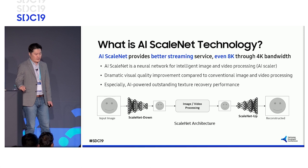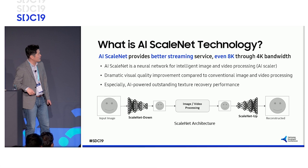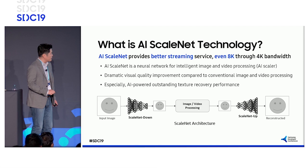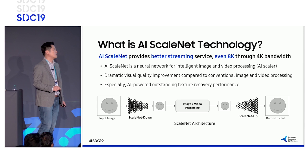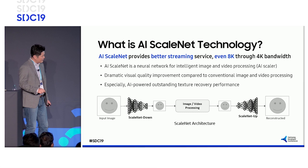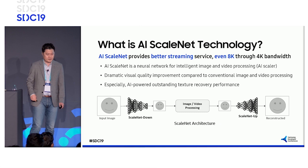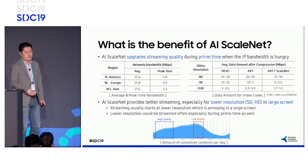Basically, ScaleNet is a neural network for intelligent image and video processing. It provides dramatic visual quality improvements compared to conventional image and video processing. This picture describes the ScaleNet architecture. The input image is scaled down by ScaleNet Down, then regular traditional image and video processing such as compression or transmission takes place, and then scaling up — called ScaleNet Up — restores the original resolution. Let's see the main benefits of ScaleNet.